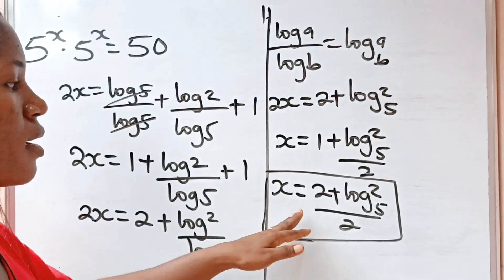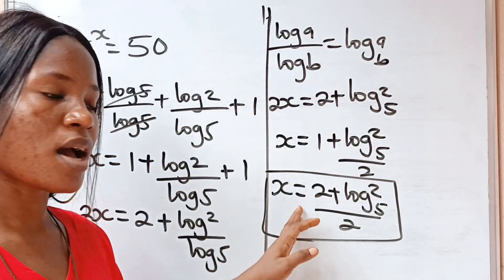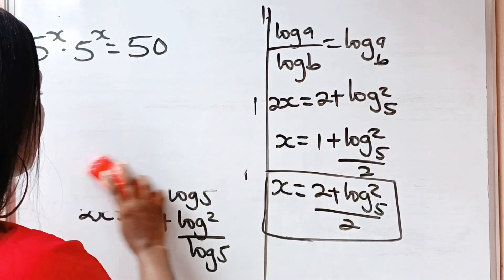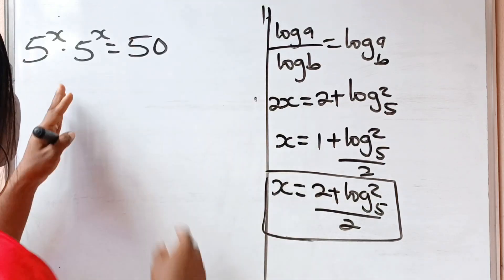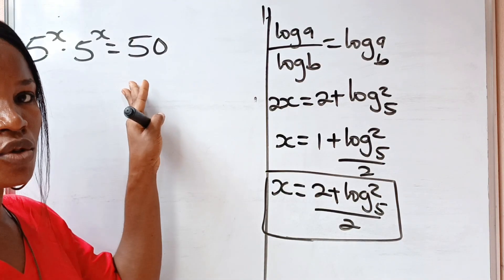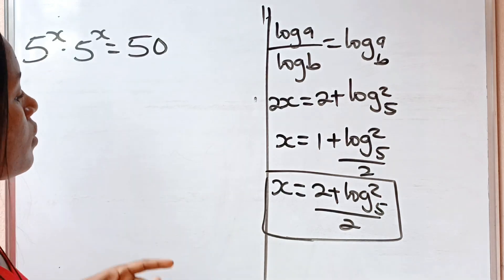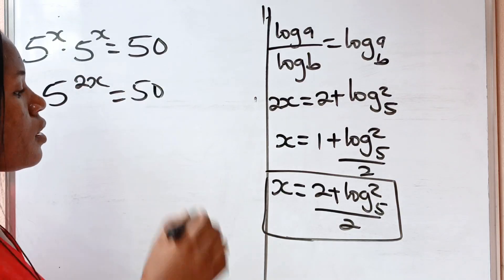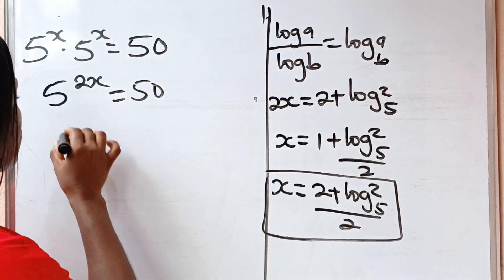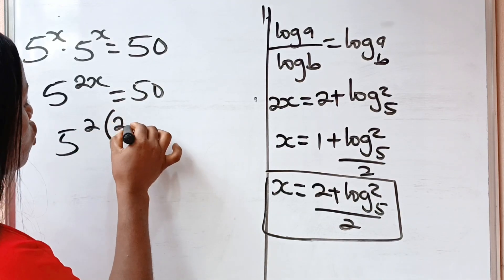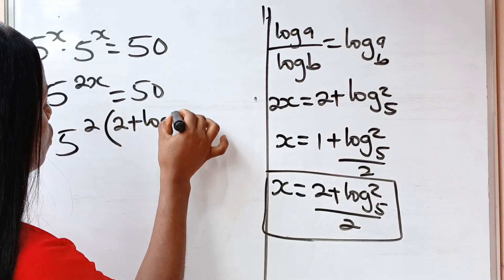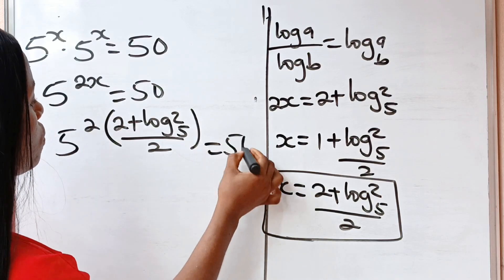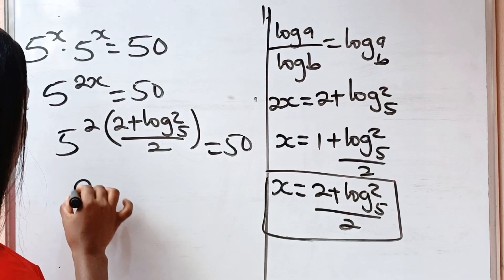Now let us prove that the answer we got is correct. Remember that the equation says 5 to the power of x multiplied by 5 to the power of x is equal to 50. We got 5 to the power of 2x is equal to 50. Let's substitute our x, so we have 5 to the power of 2 times (2 plus log base 5 of 2) divided by 2, all equal to 50.